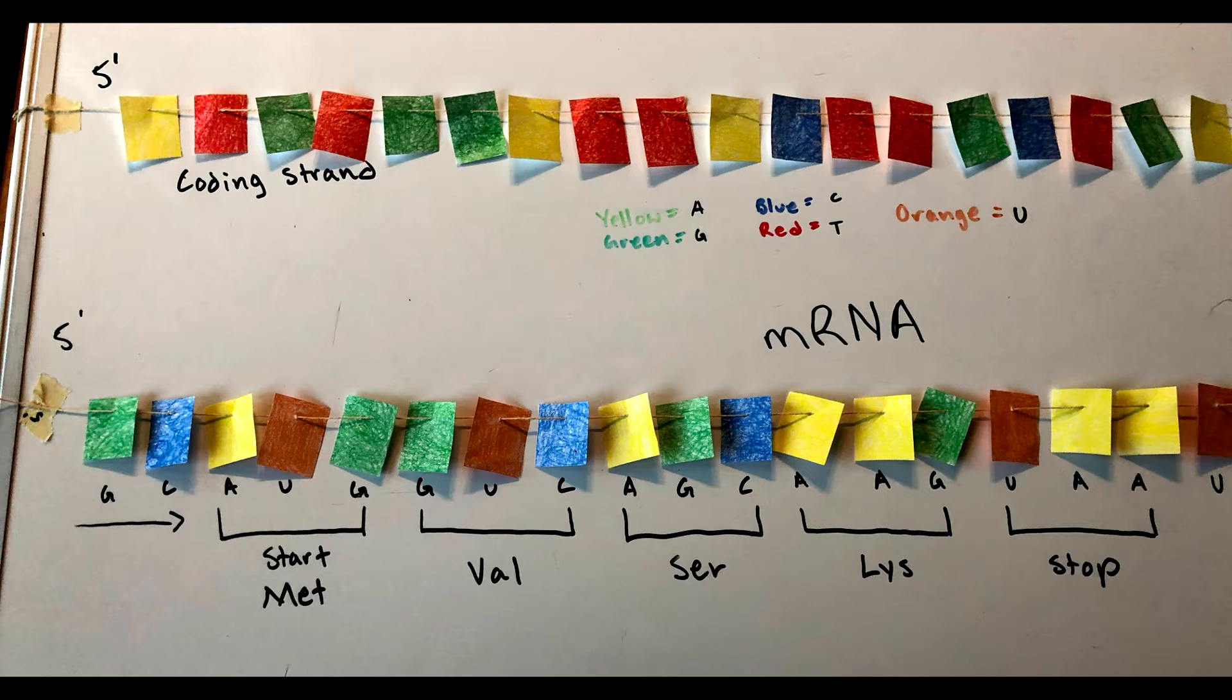The reading frame can be found by searching for the start codon AUG. Once this is found, continue down the sequence to read what amino acids will be made after translation. Stop reading when one of the stop codons, such as UAA, appears.